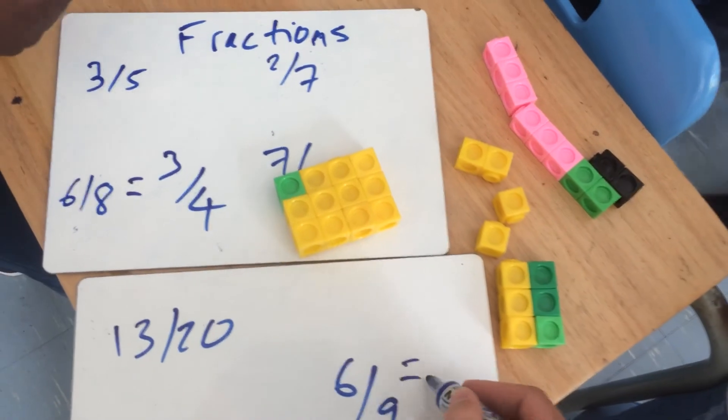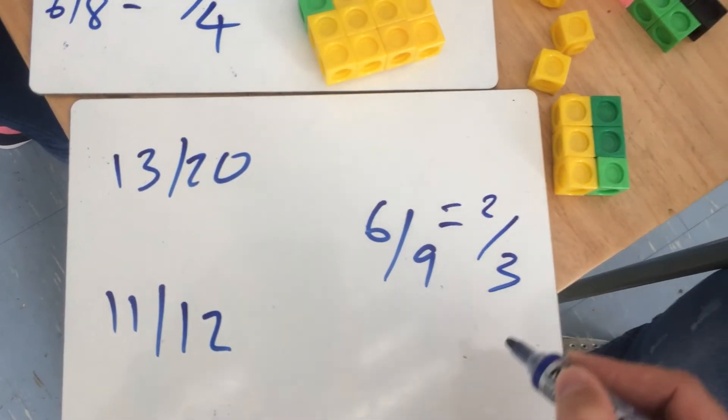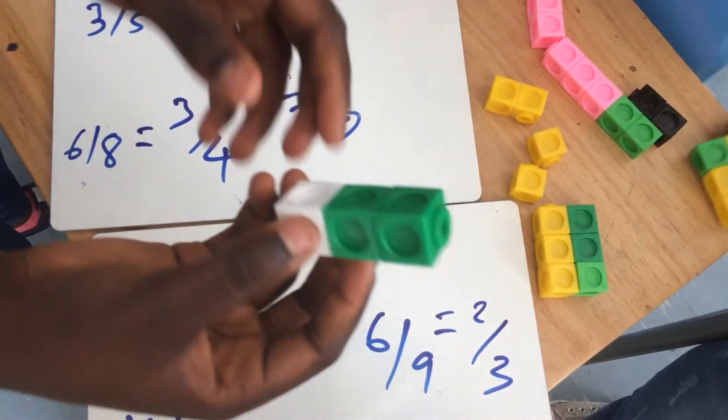There's something special about that though. What can we simplify six out of nine to? Two thirds. There we go. We've got that. Fantastic. There we go.